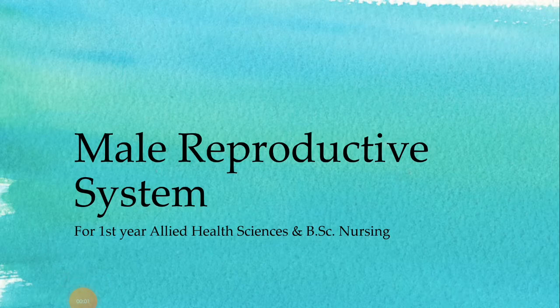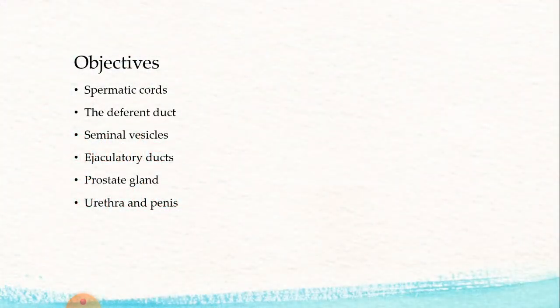In today's topic, we will cover the remaining part of the male reproductive system. The objectives of our lecture will be to cover the spermatic cord, the different ducts, seminal vesicles, ejaculatory ducts, prostate gland, urethra, and penis.